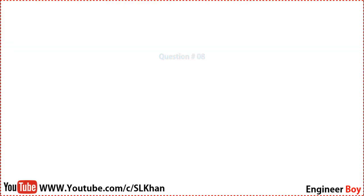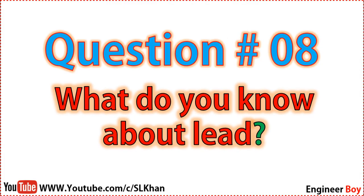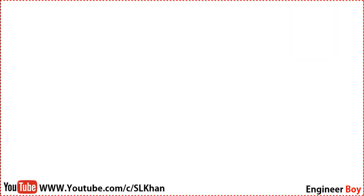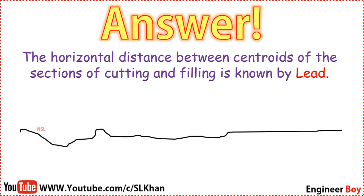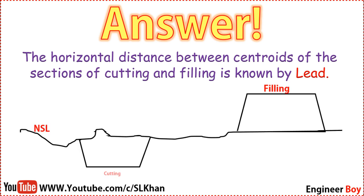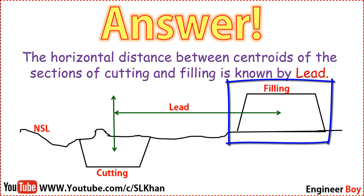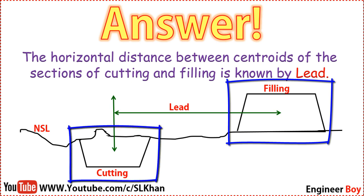Question number eight: what do you know about lead? The horizontal distance between the centroids of the sections of cutting and filling is known as lead. In the diagram, one side represents filling and the other represents cutting, and the horizontal distance between the centroids of both is known as lead.